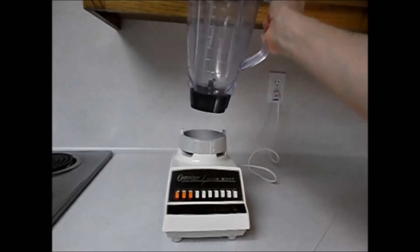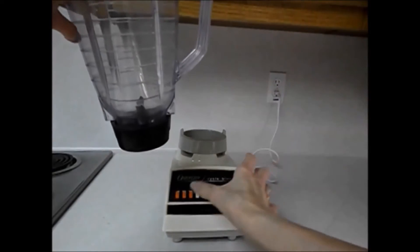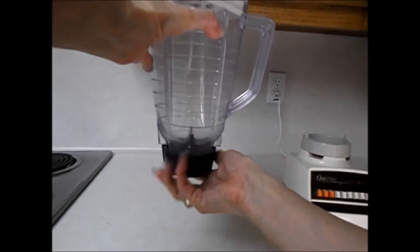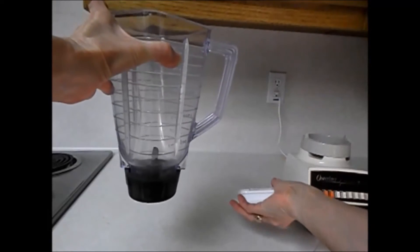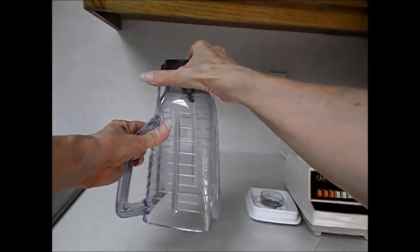Take the blender off its stand, disassemble the parts, and try to place them in the order that you take everything apart. It's easier to turn the blender upside down to take things apart so things don't fall.